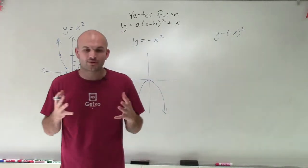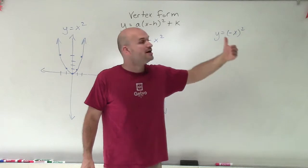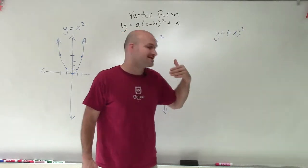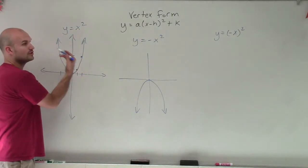And what we're going to find out is when you have a negative number multiplied inside of your function, what we're doing is we're actually reflecting it not over the x-axis, but now we're reflecting this graph over the y-axis.